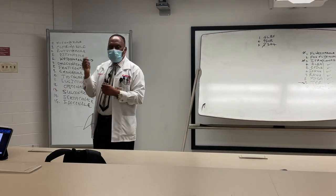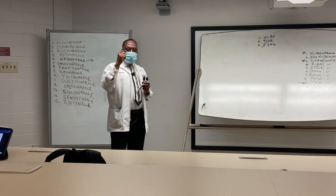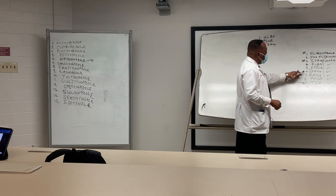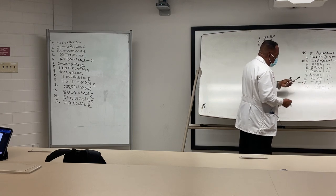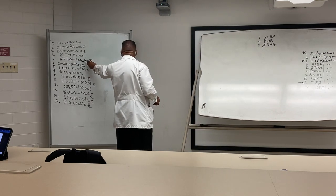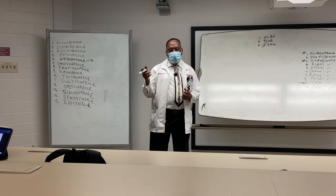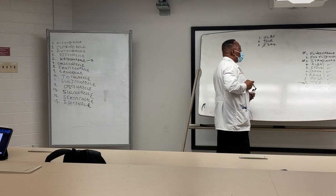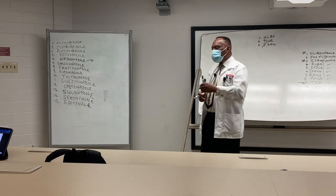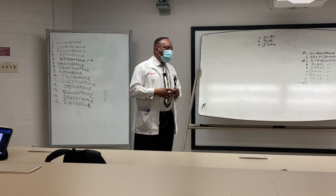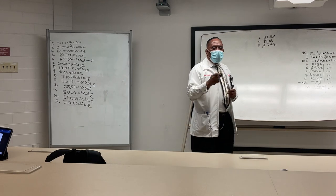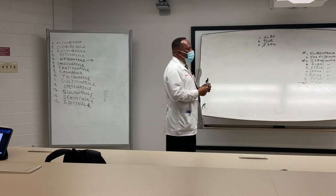Some azoles are very strong inhibitors of 3A4 — voriconazole, itraconazole, posaconazole, and ketoconazole are strong inhibitors. Fluconazole is a moderate-to-low inhibitor of 3A4, but it is a very strong inhibitor of CYP2C19. So fluconazole is a moderate inhibitor of 3A4 but a strong inhibitor of 2C19.